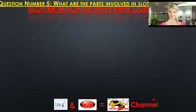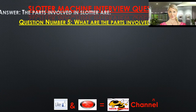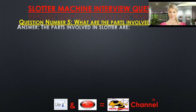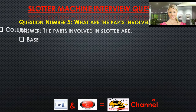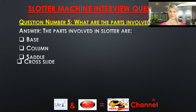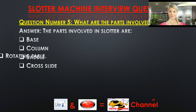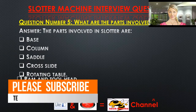Question number five: What are the parts involved in a slotter? Answer: The parts involved in a slotter are base, column, saddle, cross slide, rotating table, ram, and tool head.